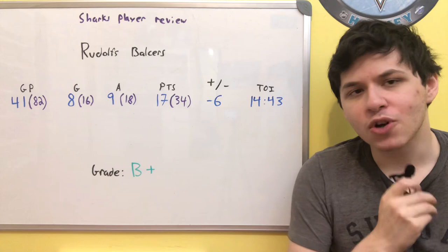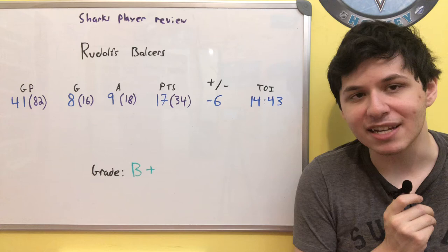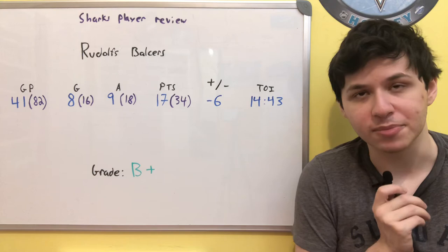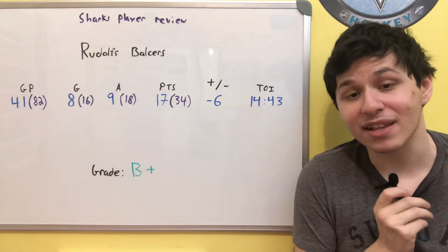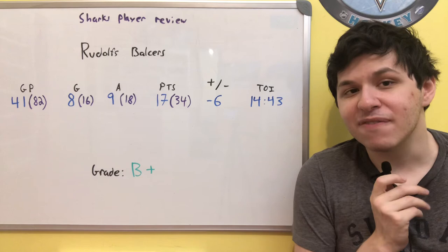And so going into the next season, it seems as though Balcers should end up being a third-line player, as the Sharks' top six, as long as nothing changes during the offseason, which is technically possible. Their top six will probably end up being Hertl, Couture, Meier, Labanc, Kane, as well as a sixth player being Alexander Barabanov, and Balcers could end up on that third line.